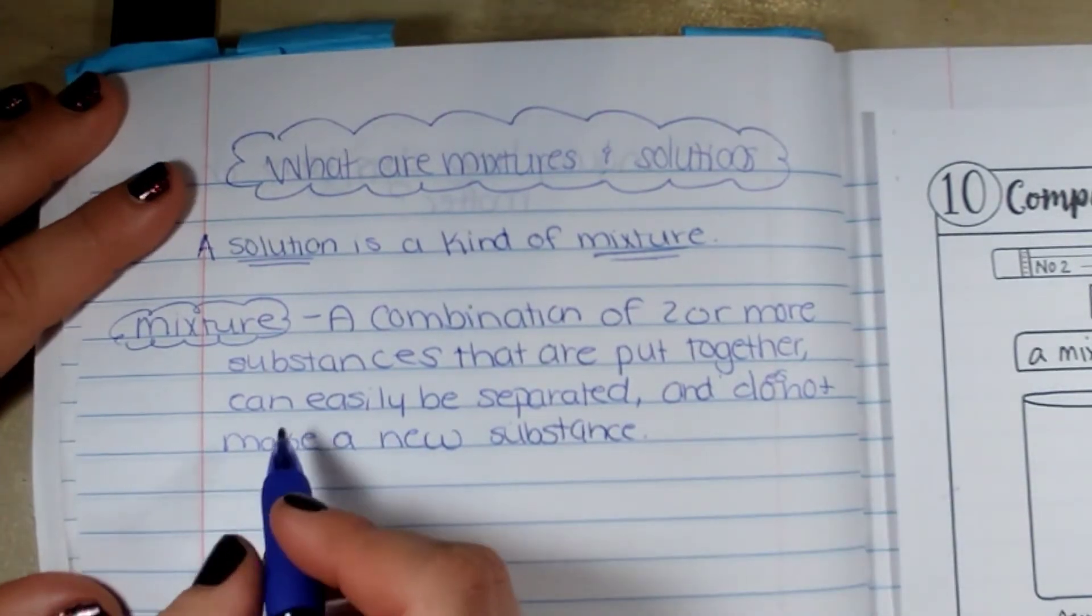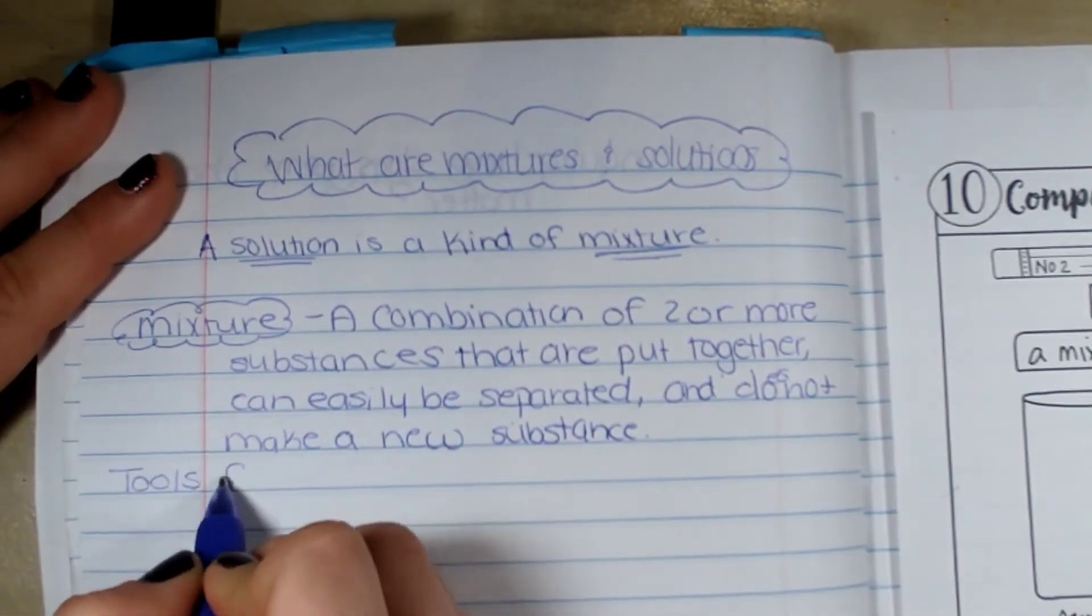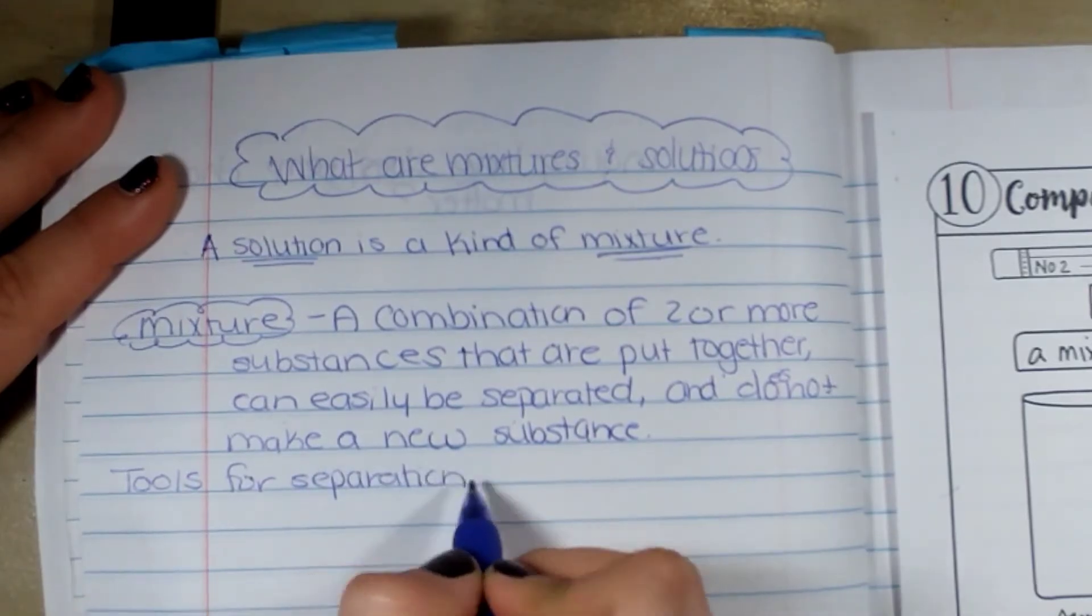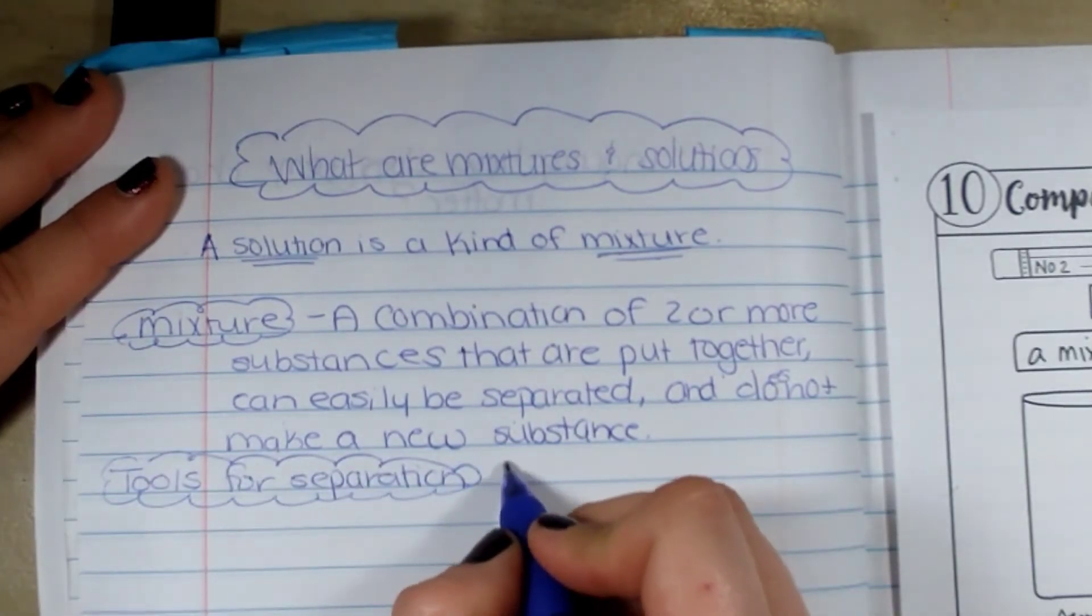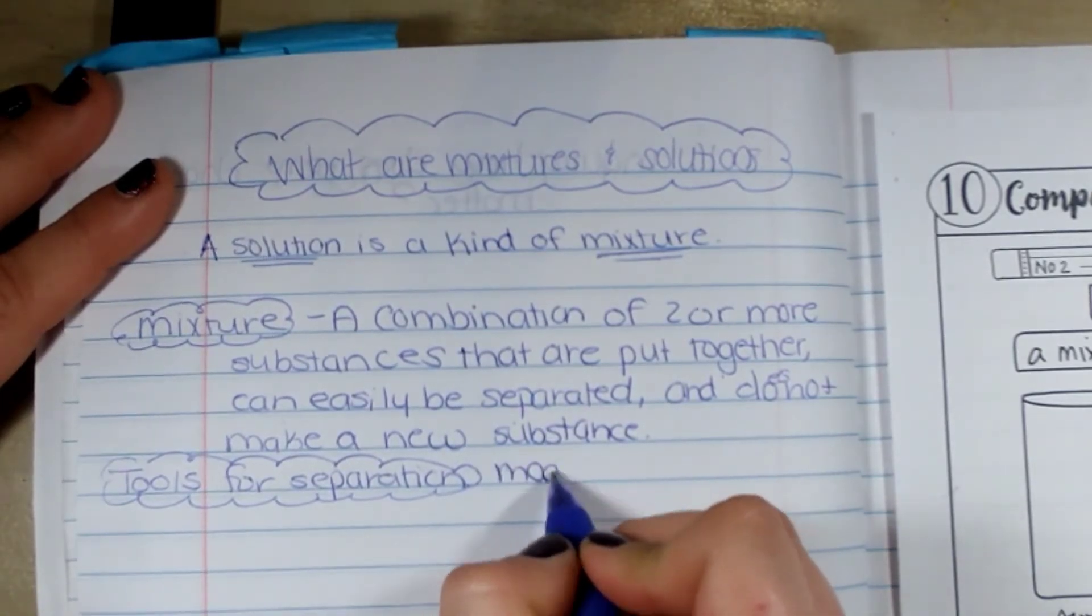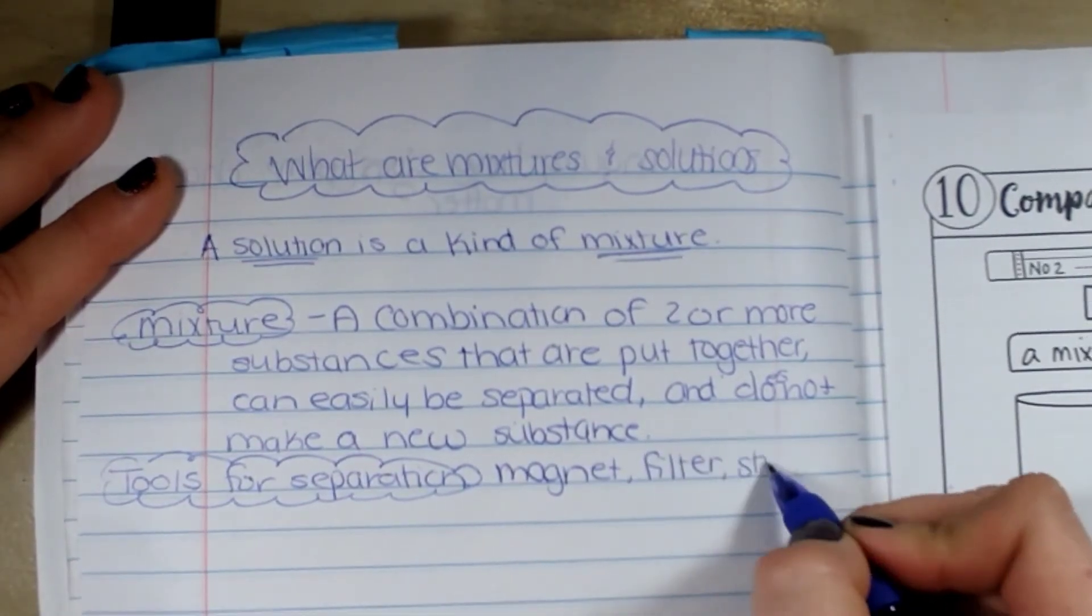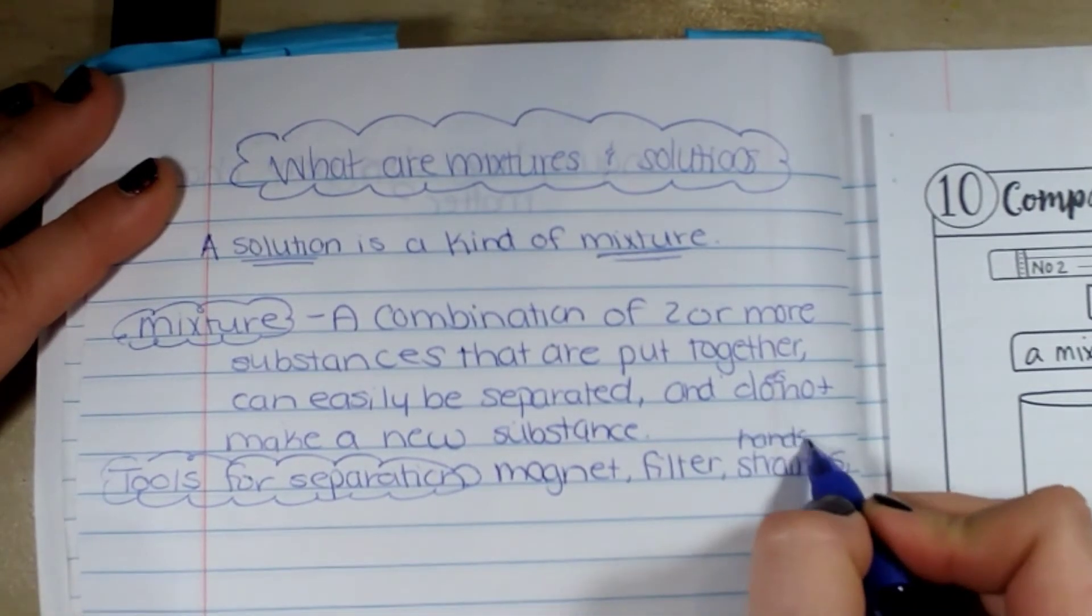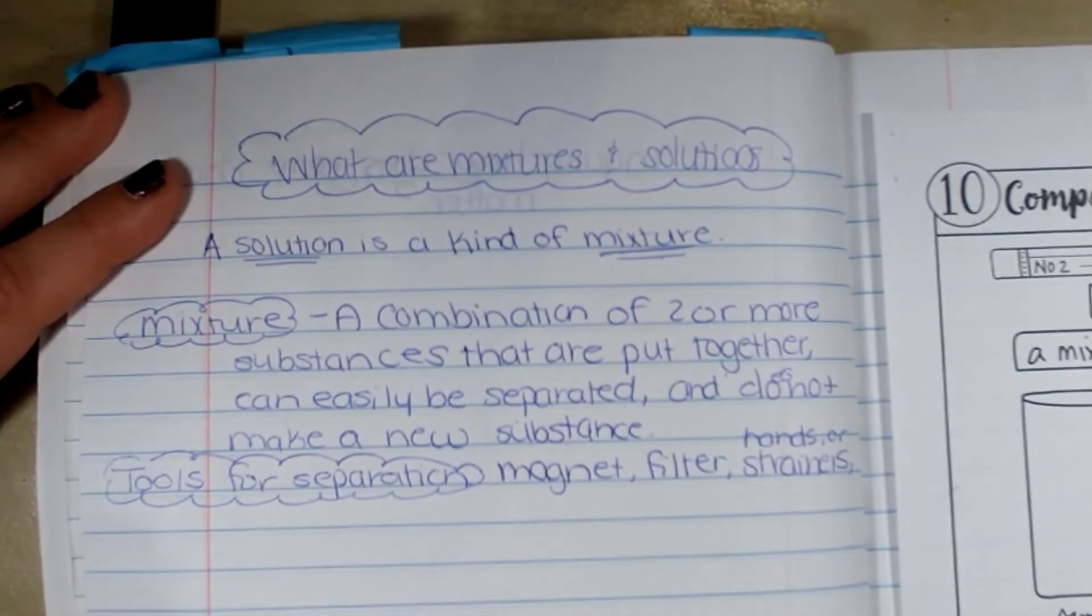Here are some tools that we could use for separation. Those things that we want to use to separate the different things could be magnet, a filter like a coffee filter, a strainer, or your hands. Just pick them out, like if you had Chex Mix you could just pick it out.